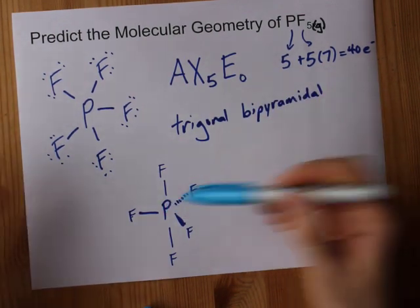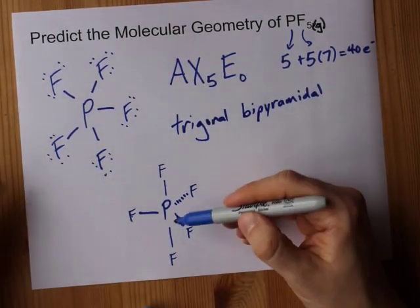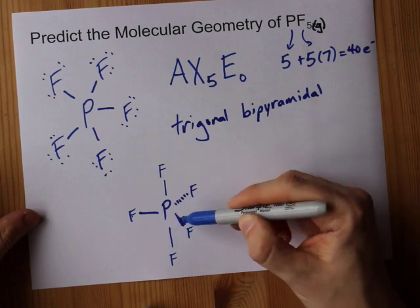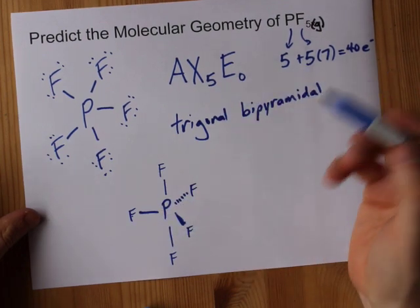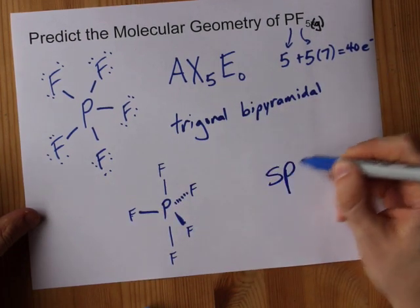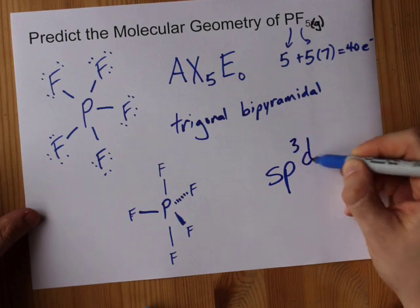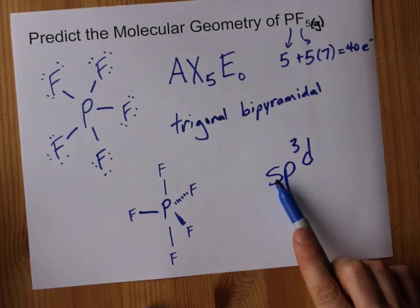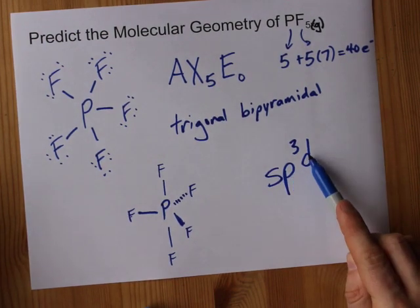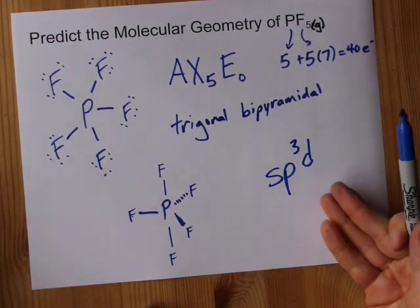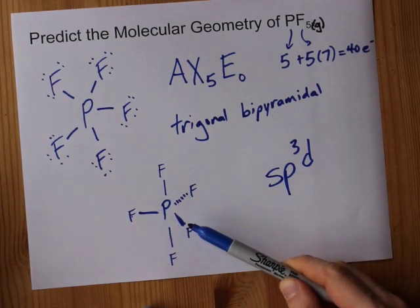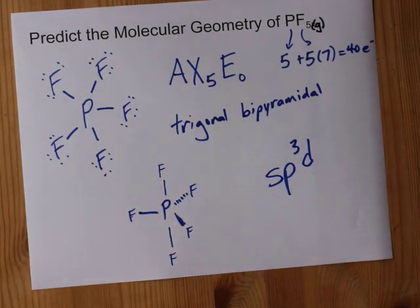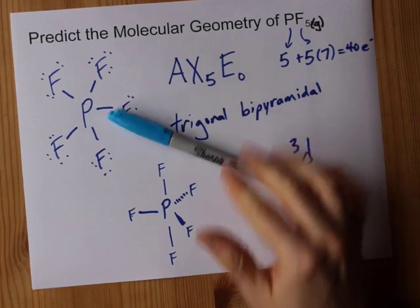Lastly, what's the hybridization of phosphorus here? For five things around the center atom with none of them being lone pairs, it's almost always sp3d1—you don't write the one, it's just sp3d—because you need one, two, three, four, five equivalent hybridized molecular orbitals to make these five bonds. That's just the way it is.